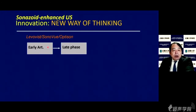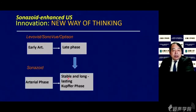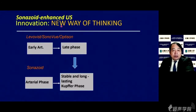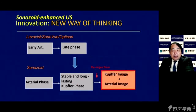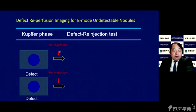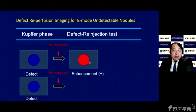Because of the long-lasting Kupffer phase, by injecting Sonazoid, both the Kupffer image and artery image are obtained at the same time. So Defect Reperfusion Imaging can detect the previously undetectable nodules. For example, in Kupffer phase, if the Kupffer phase shows a defect and reinjection provides enhancement inside the defective lesion, this enhancement leads to the diagnosis of typical HCC.